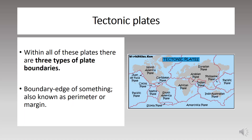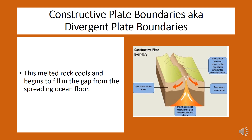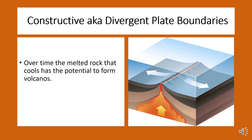Within all these plates, there are three types of plate boundaries. The first type is constructive plate boundaries, also known as divergent plate boundaries. This type of boundary occurs when two plates move apart. New ocean floor is constructed from hot magma, which is melted rock that rises deep from inside the Earth. This melted rock cools and begins to fill in the gap from the spreading ocean floor. Over time, the melted rock has the potential to form volcanoes.